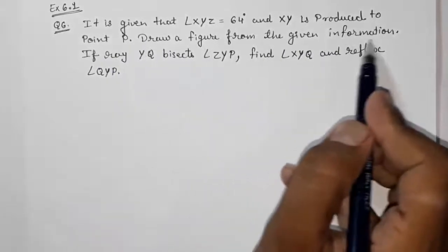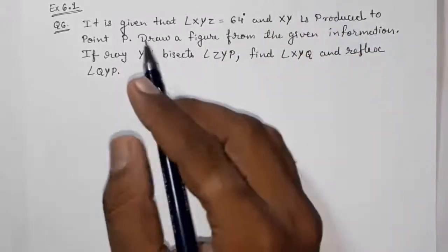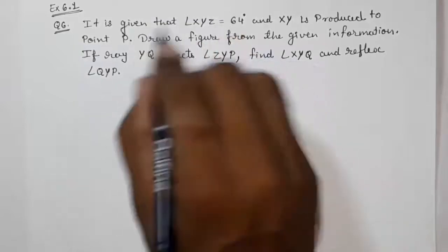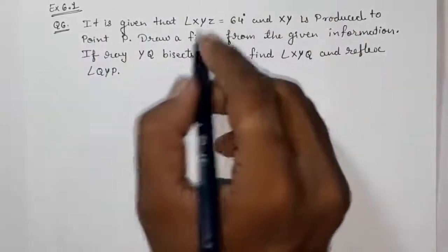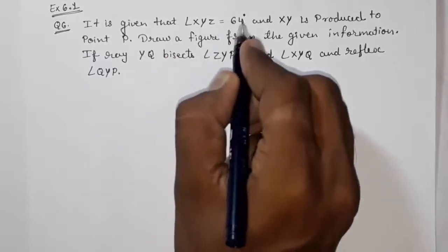Draw a figure from the given information - they had not given us any figure, we have to draw a figure by ourselves. So first we have to see the first line and then one by one. First they told us that XYZ is equal to 64.